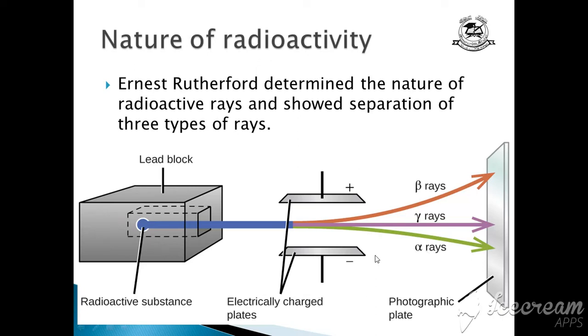Unlike charges attract each other. The second component deflected towards the positive plate. These are known as beta rays, which are basically electrons and have negative charge. The third type carried no charge and no mass and were not deflected in the electric field. These were named gamma rays.